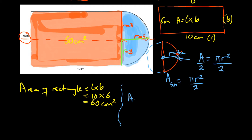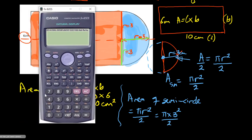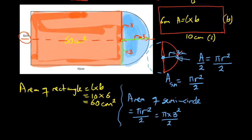With that, you can find the area of the semicircle. Area of semicircle equals πr² over 2, which is π times 3 squared over 2. Using your calculator, the final answer is 14.137 centimeters squared to 3 decimal places.